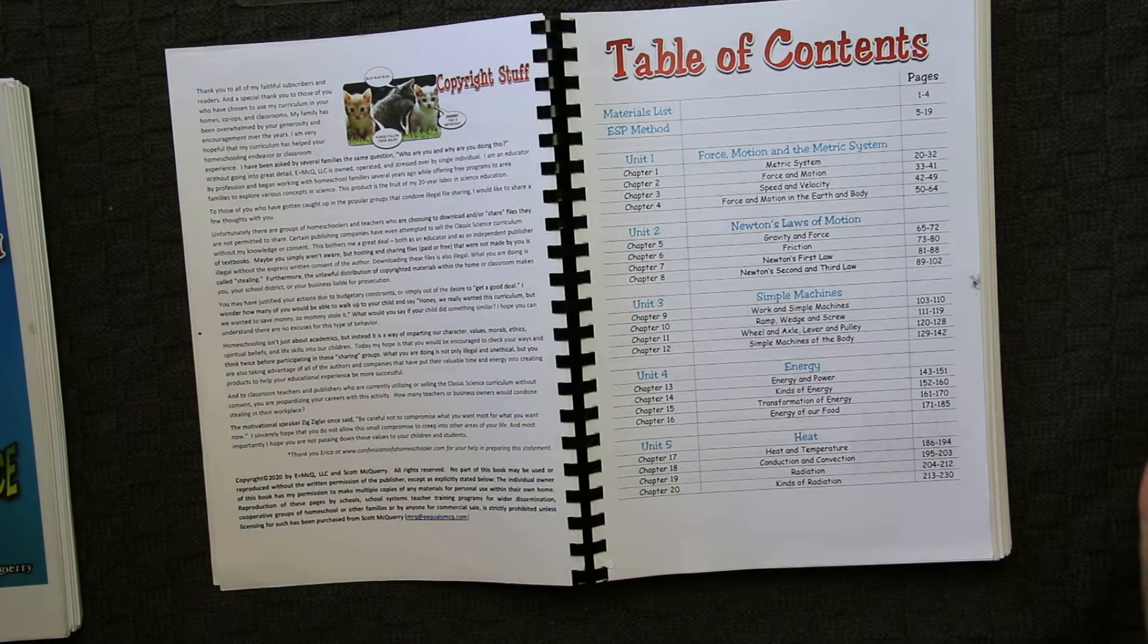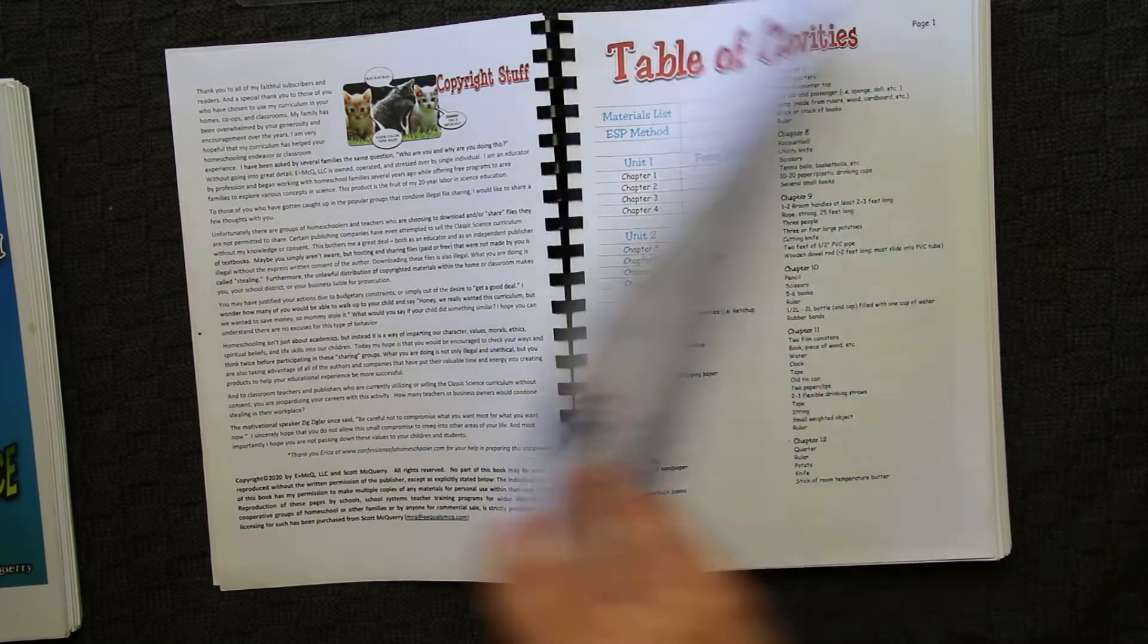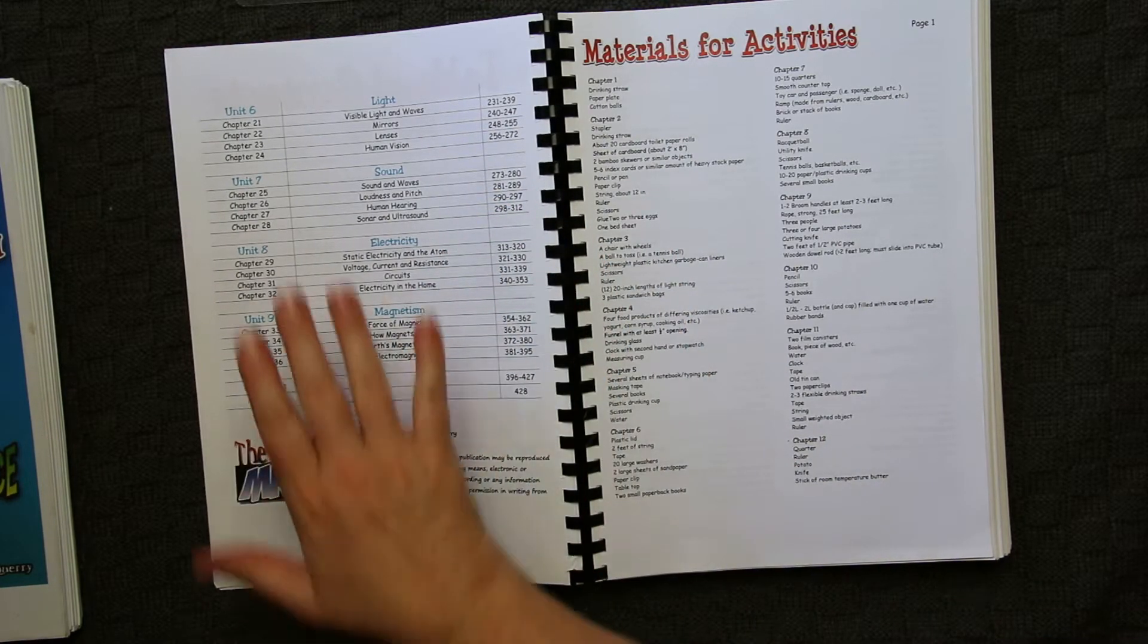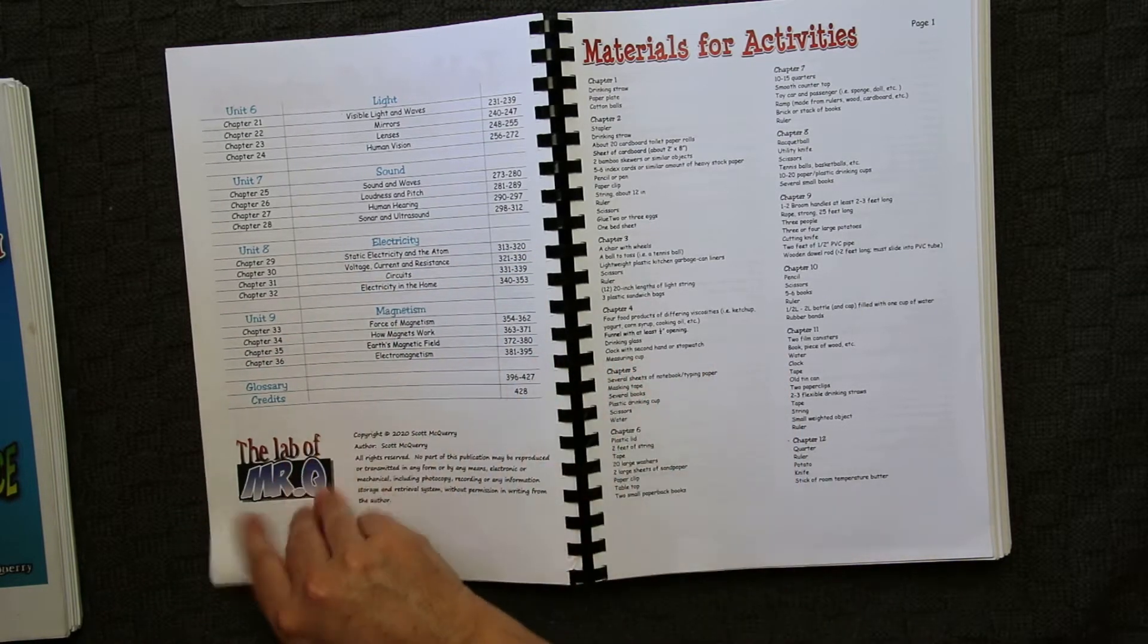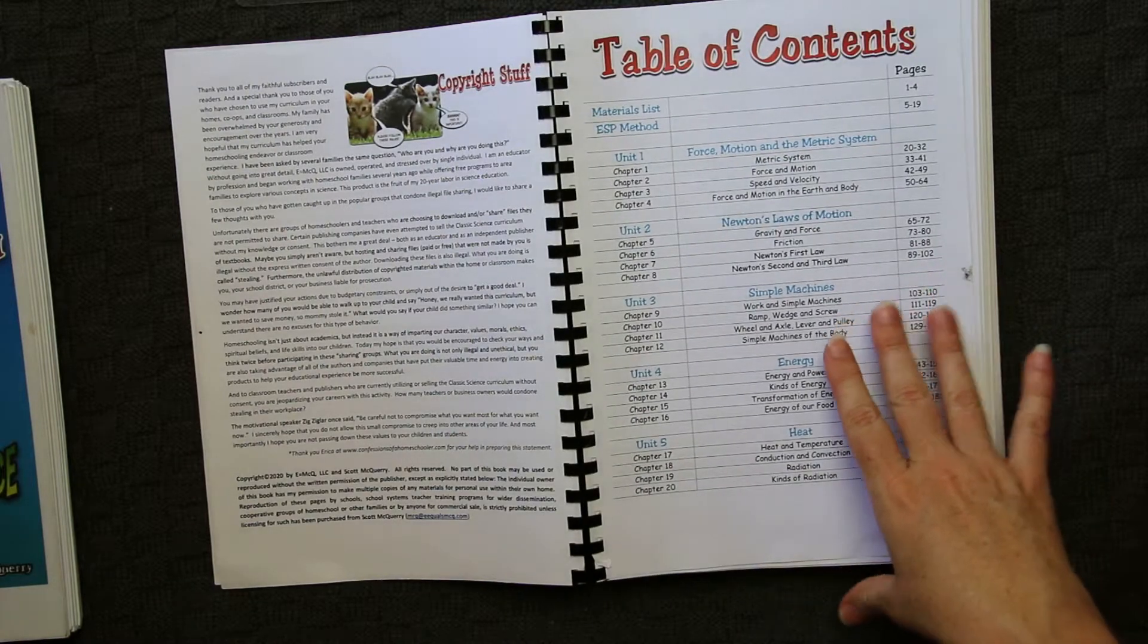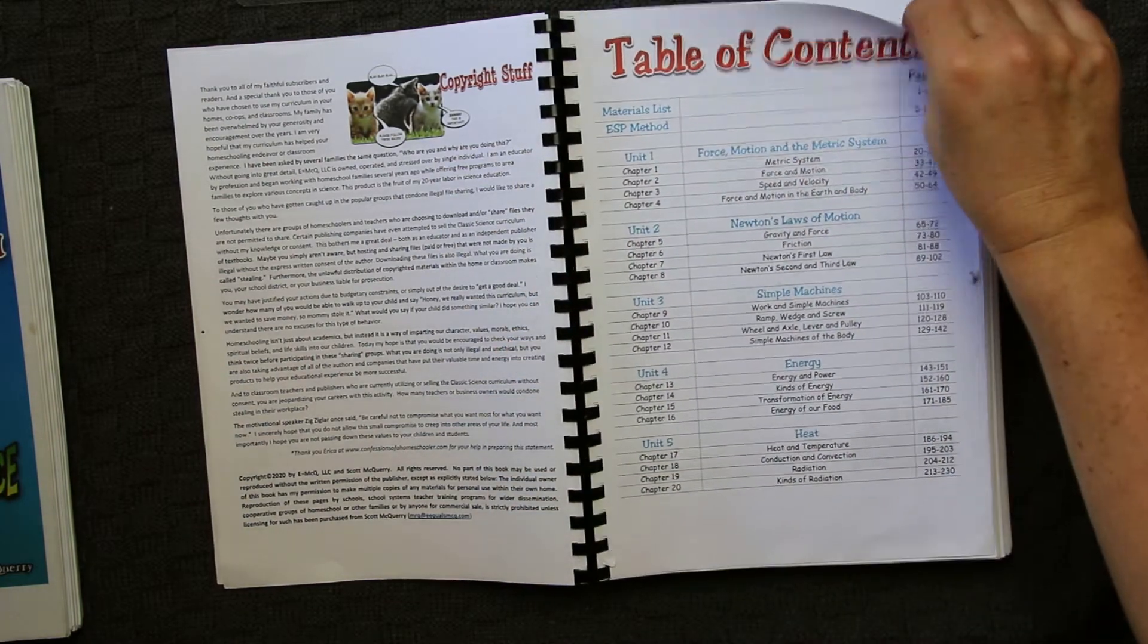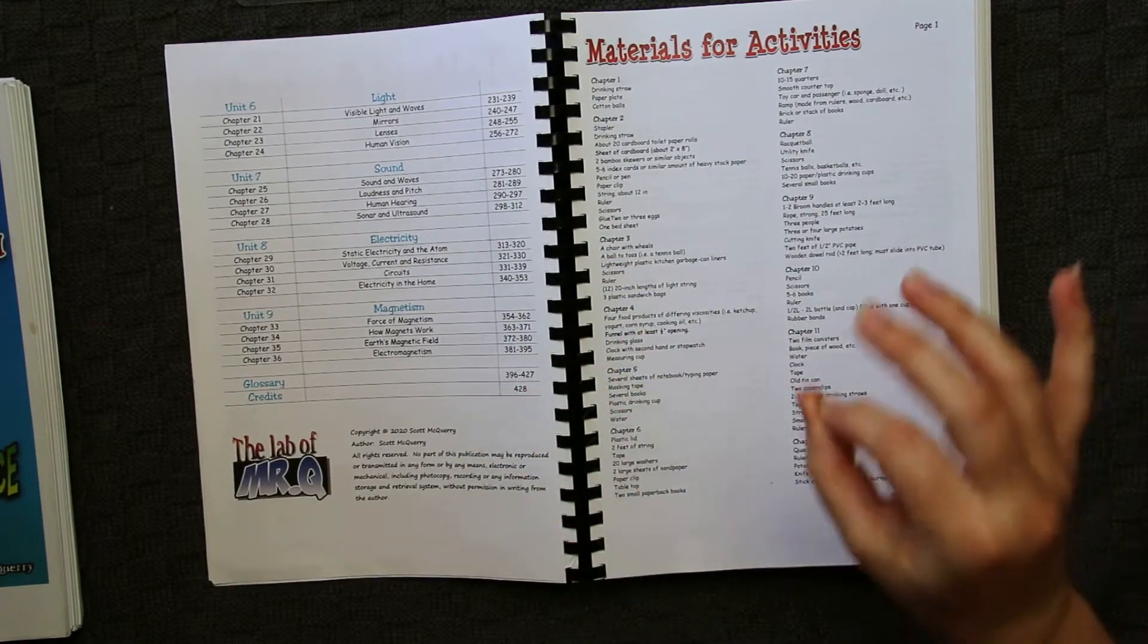It covers pretty much the standard topics that someone in primary school would cover under the physical science program. So you've got force and motion, Newton's law, simple machines, energy, heat, light, sound, electricity, and magnetism. Each unit is made up of four chapters. Each chapter includes a reading component, some worksheets, as I said, and most generally, two hands-on activities.